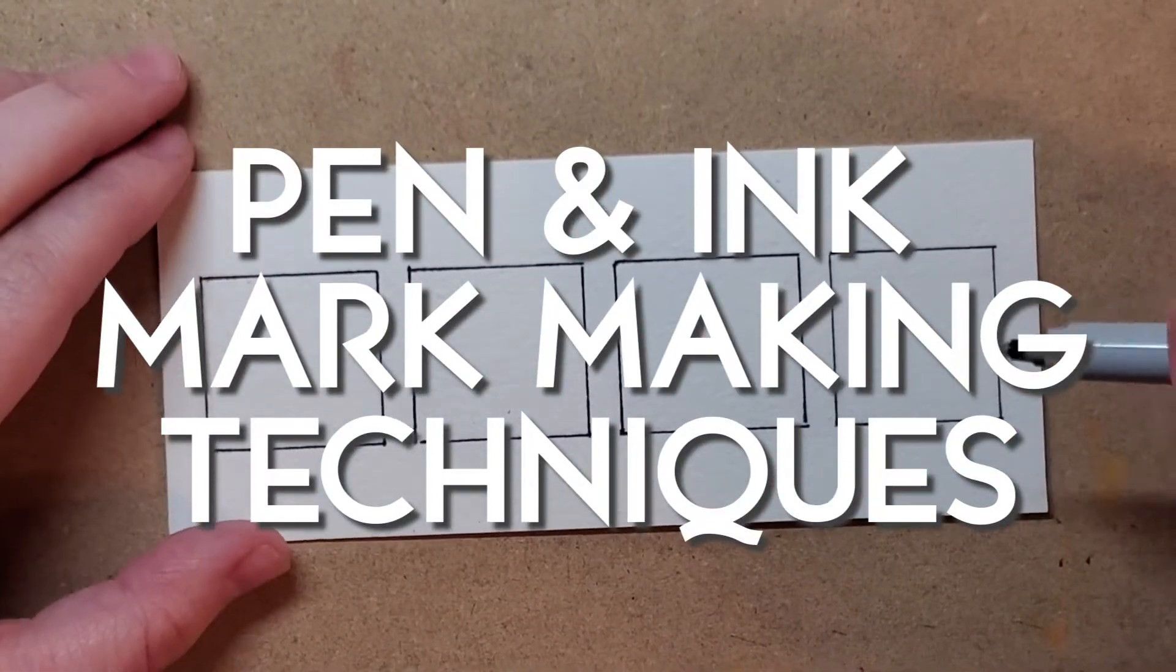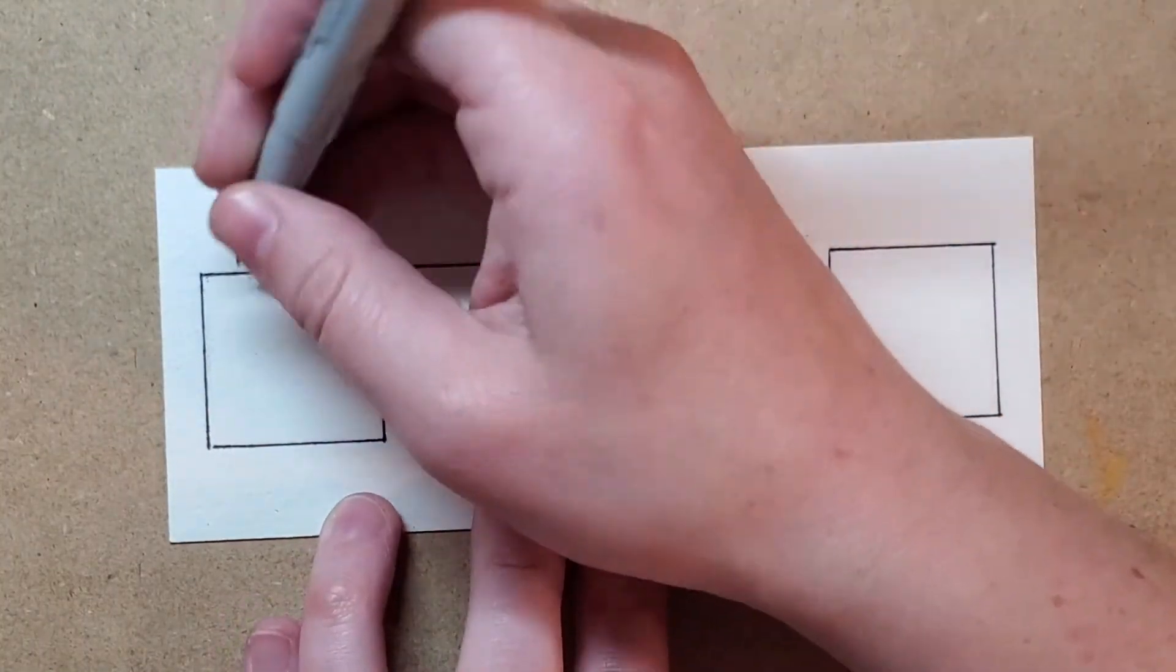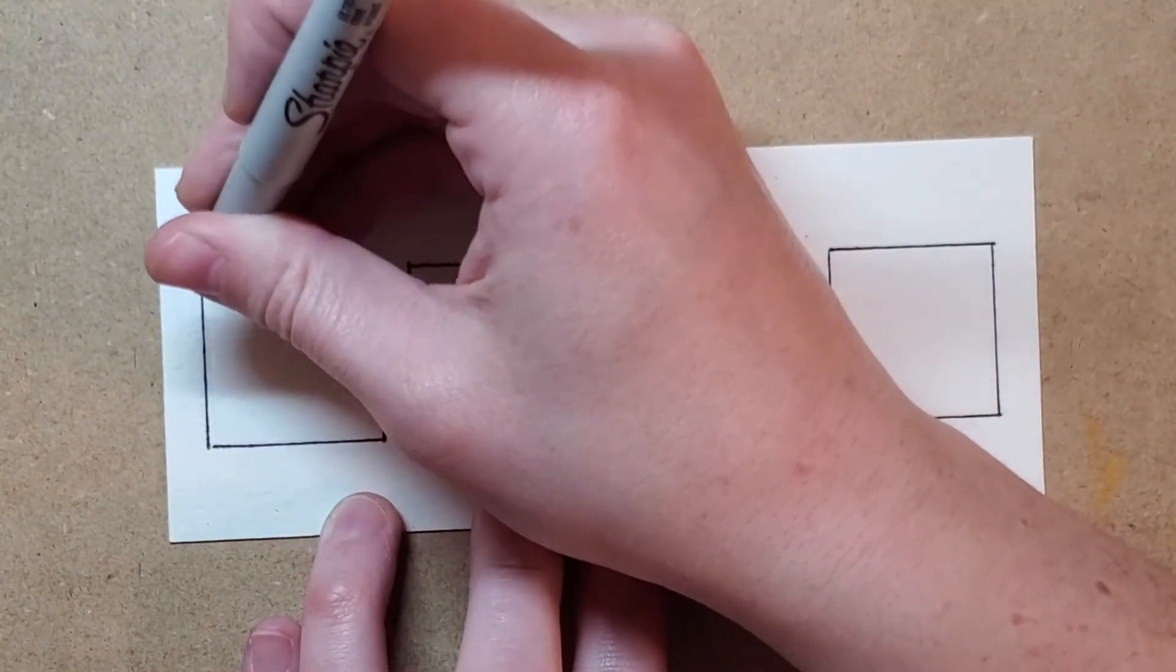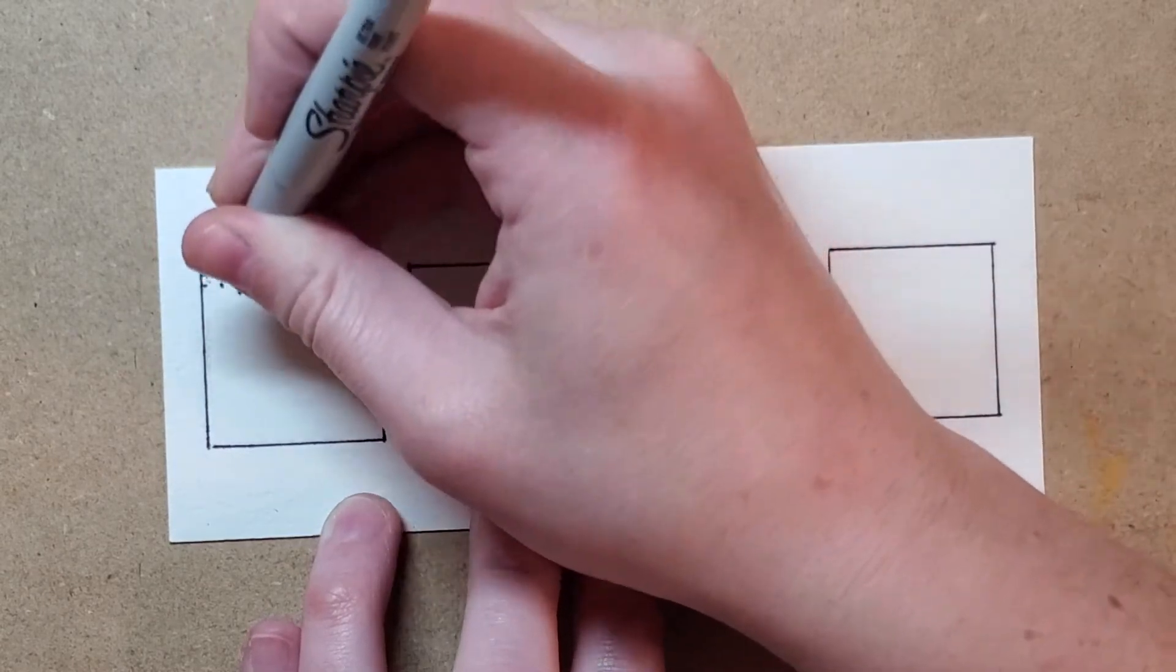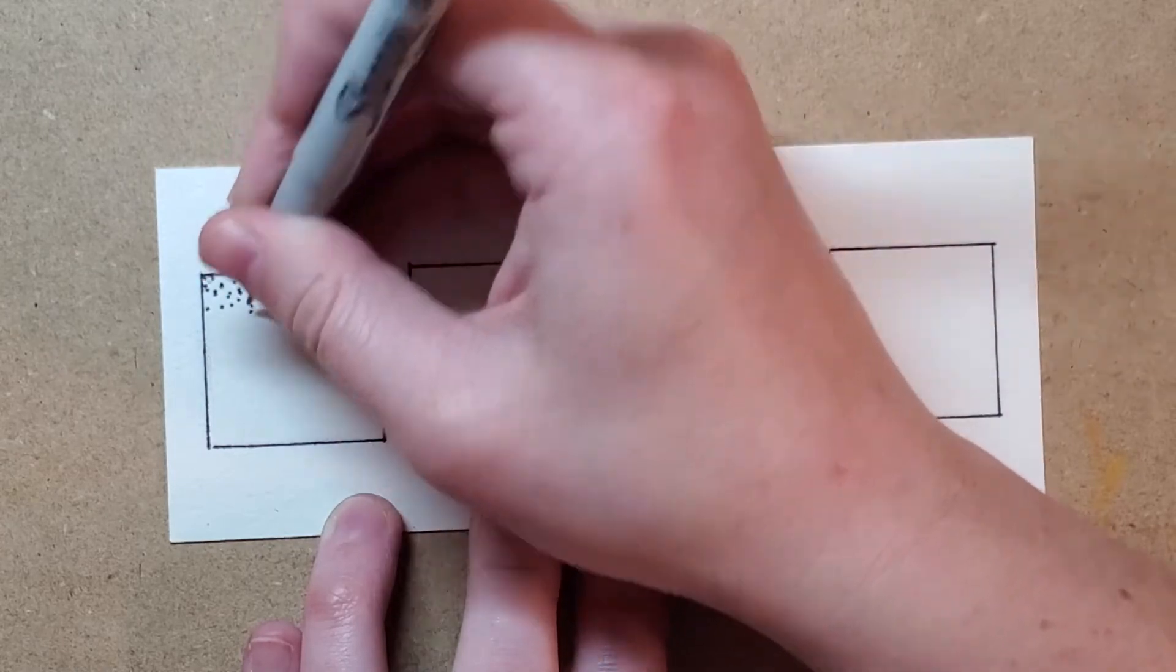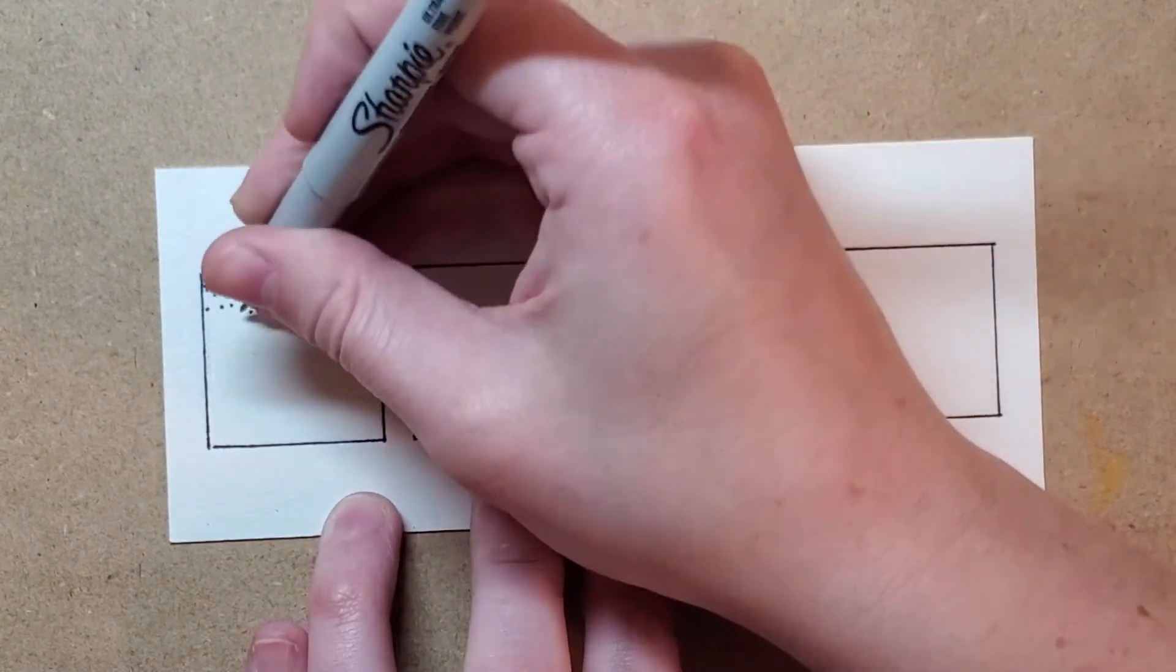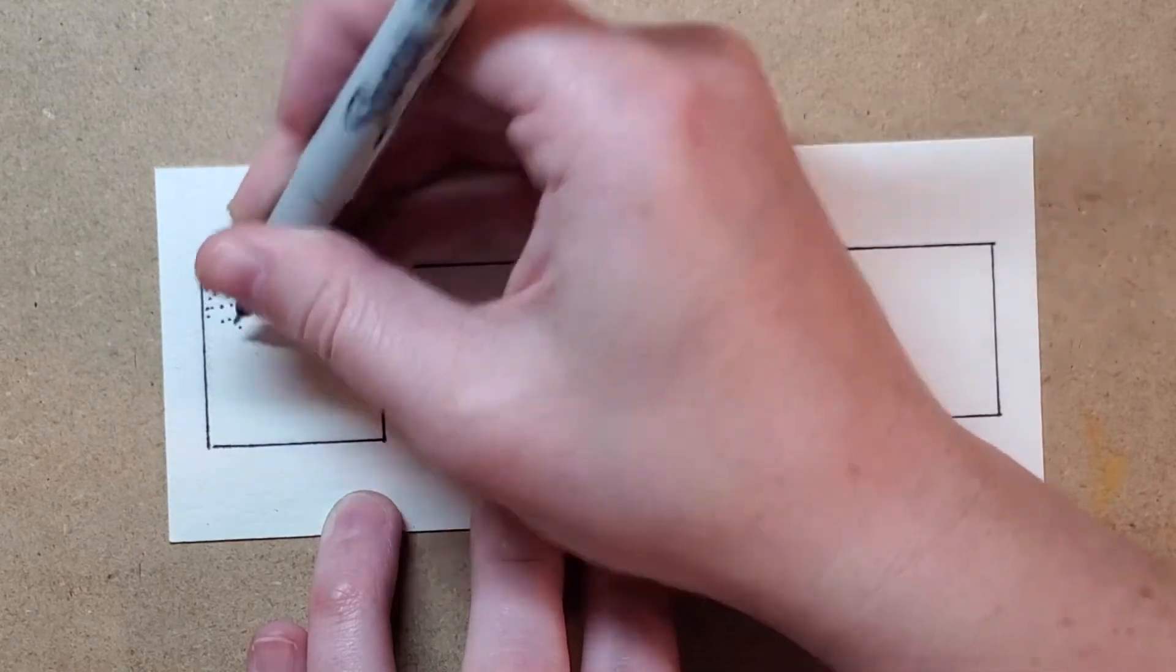So one of them is stippling. Now with stippling, it just involves making lots of dots over and over and over again. This is best done with some kind of marker pen with a felt tip, like a Sharpie.